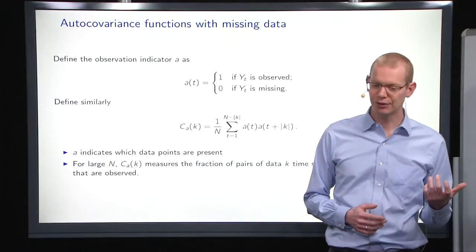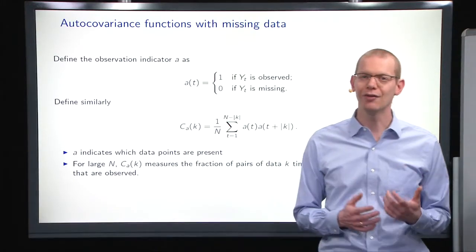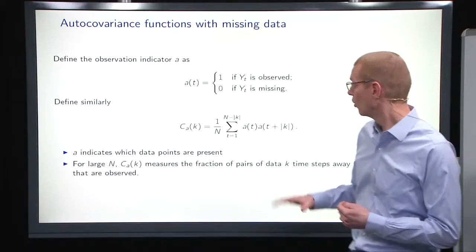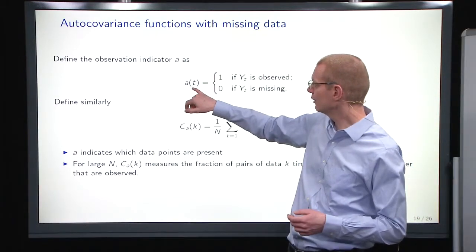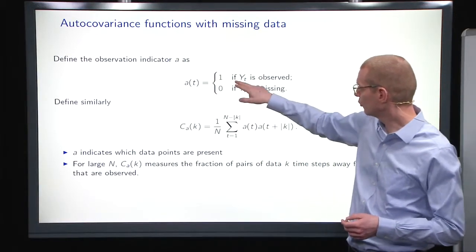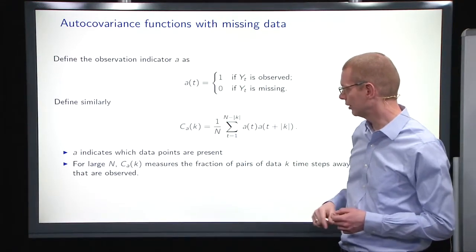The next part of this is about the autocovariance function when you have missing data. Now, we will first define an indicator function a that is 1 if y_t is observed and 0 if it is missing.